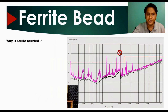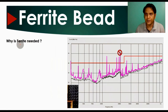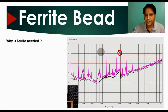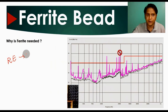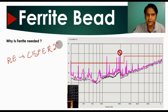The first question is: why do we need a ferrite bead? To understand this, consider a plot for radiated emission. You can look at the CISPR 22 standard for radiated emission to find the limit and passing criteria.